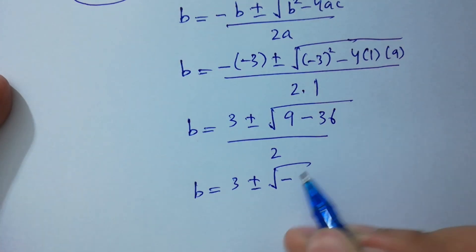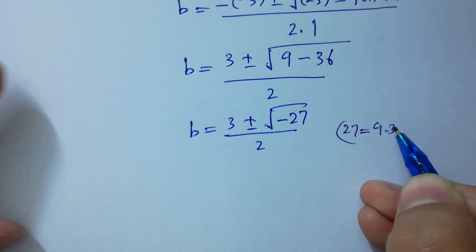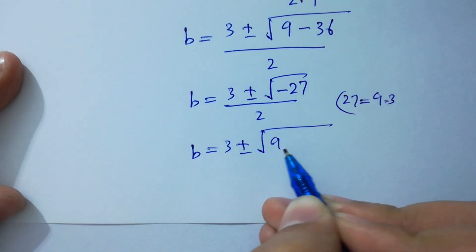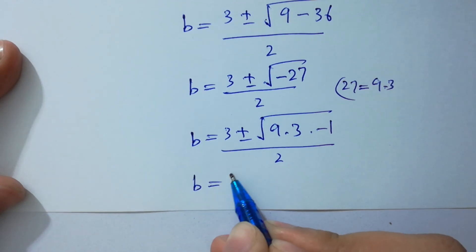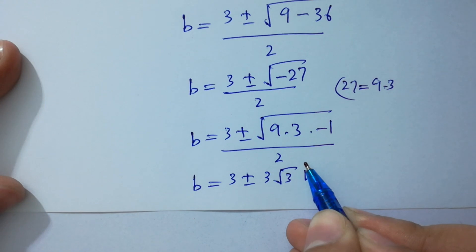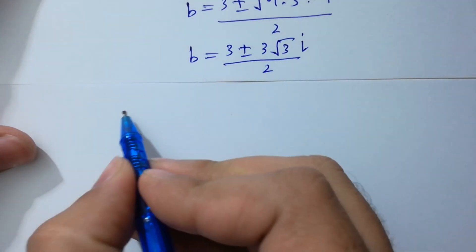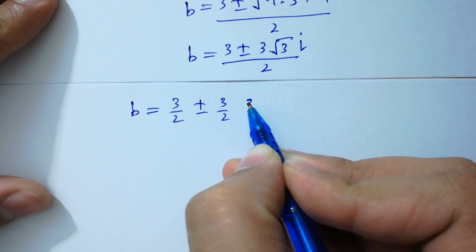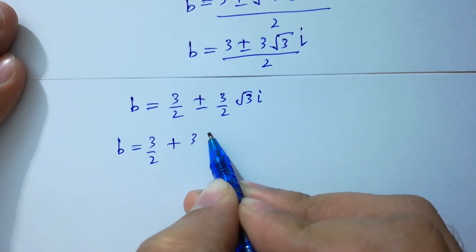Simplifying, B equals (3 ± √(negative 27)) / 2, which gives B equals (3 ± 3√3 · i) / 2. So B equals 3/2 plus 3√3/2 · i as the second complex solution.